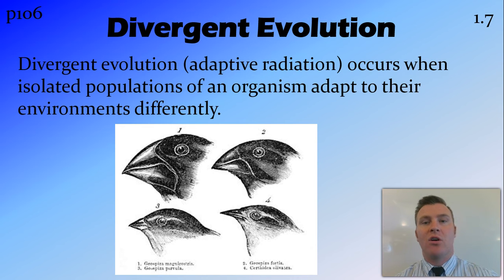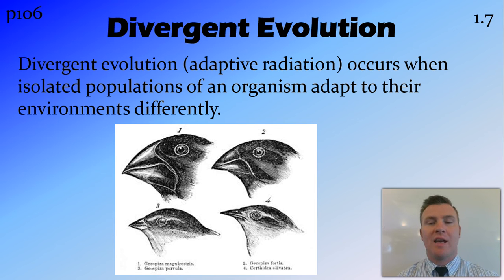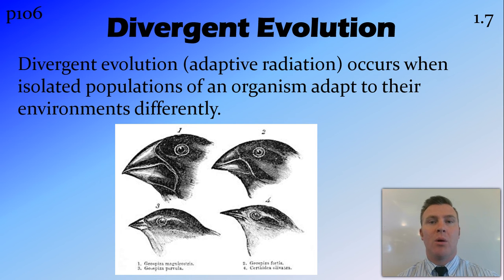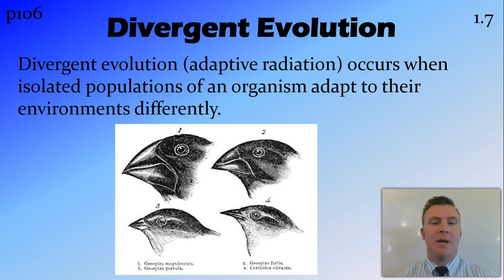Now we'll look at the difference between divergent and convergent evolution. Divergent evolution, also called adaptive radiation, is when you have a common ancestor and populations of that organism are separated or isolated and therefore evolve or adapt to their environment differently. A good example is Darwin's finches on the Galapagos Islands — they all descended from one finch population that spread across the different islands, and because of the different food available, they developed different beak structures.